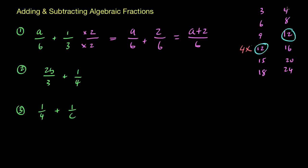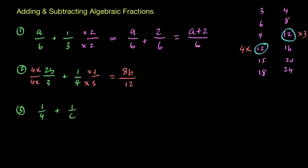I'm going to put 4 times on that denominator, and over here we multiply 4 by 3 to get to 12, so I'm going to do the same to the top — 4 times there. Over here, multiplying 4 by 3 gives 12, and the same thing on the top, so I times that by 3 as well. So 4 times 2b gives 8b, with 4 times 3 equalling 12, and here a plus 3 over 12. Since the denominators are now the same, we bring everything together: 8b plus 3 all over 12, and that's your final answer.